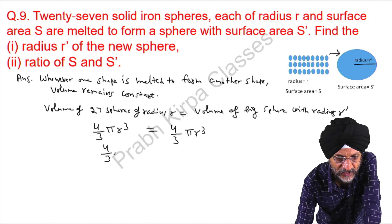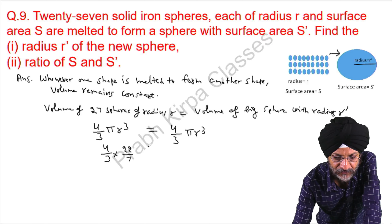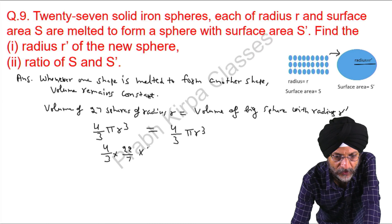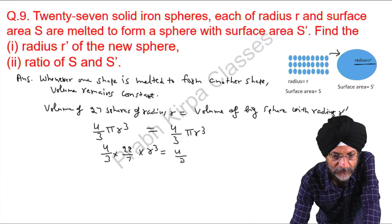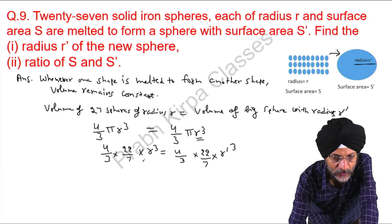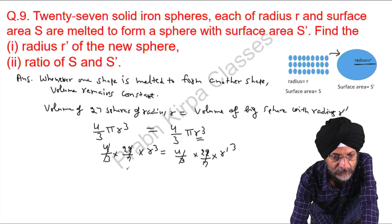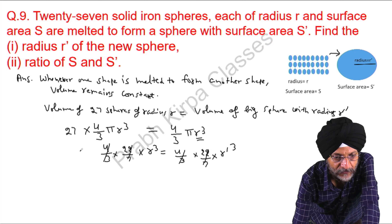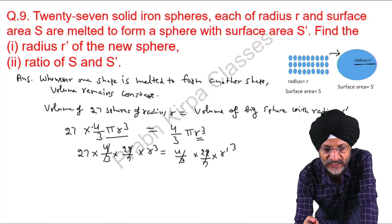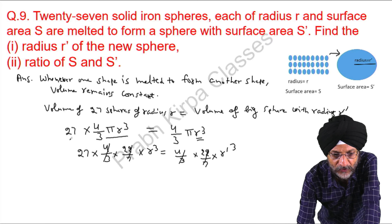We put in the relevant values: 4 over 3 times 22 over 7 times R cubed equals 4 over 3 times 22 over 7 times R dash cubed. Since there are 27 small spheres, we multiply the left side by 27, because 4 over 3 pi R cubed is the volume of one sphere, and there are 27 of them.